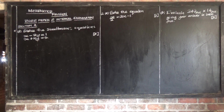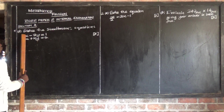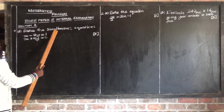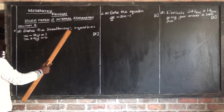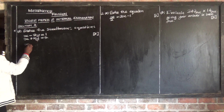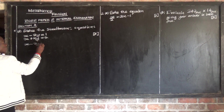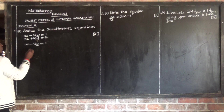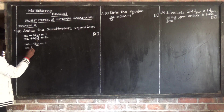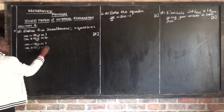Let's look at the last question of question 1, section 8. This is question d(i). It says solve the simultaneous equations: x minus 3y is equal to 1, and x plus 2y is equal to 6.